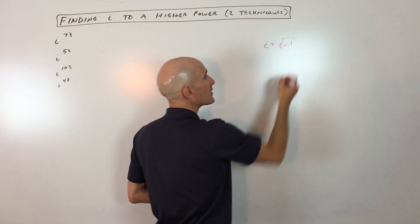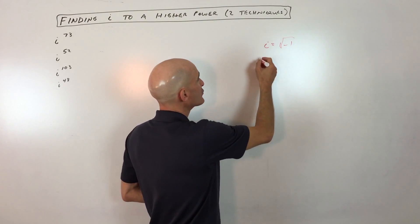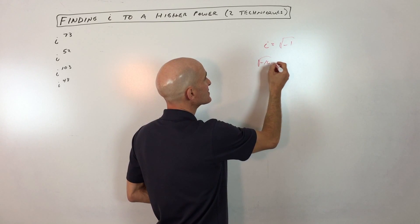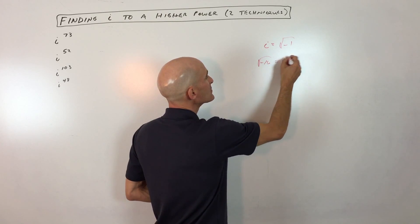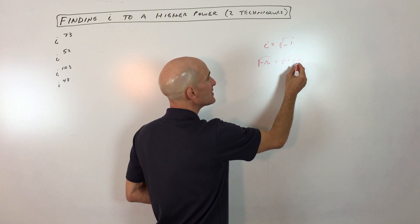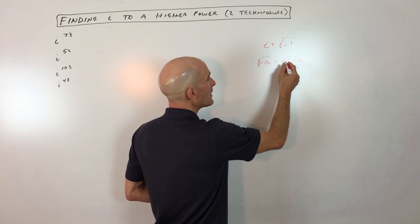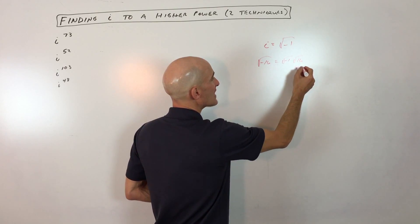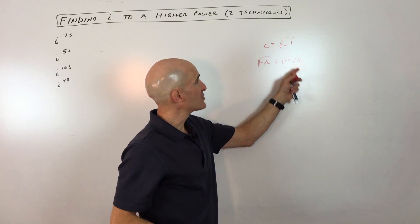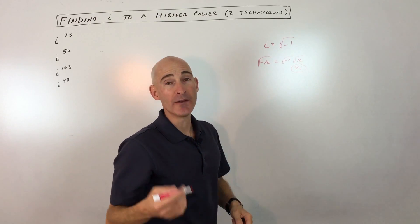i represents the square root of negative 1. For example, if you're taking the square root of negative 16, you can split this up into square root of negative 1 times square root of 16. The square root of 16 is 4, and the square root of negative 1 is i, so we just write this as 4i. That i is just representing the square root of negative 1.